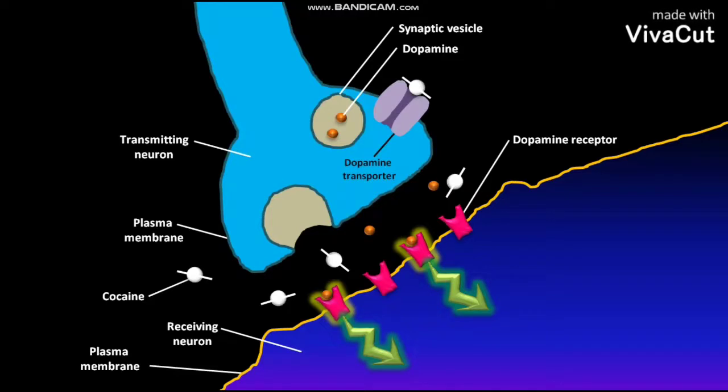When the bound dopamine escapes from the dopamine receptor and tries to enter the transmitting neuron via the dopamine transporter, the bound cocaine inhibits it. The free dopamine again binds to the dopamine receptor and again activates it.